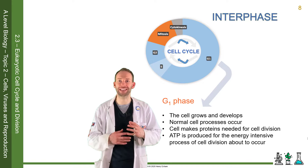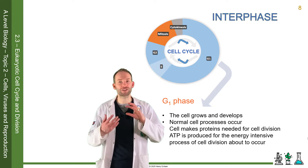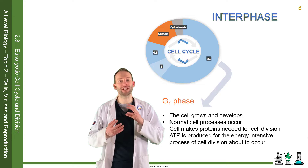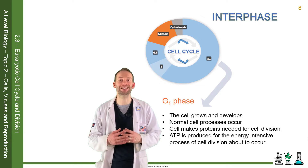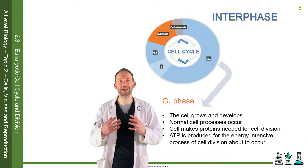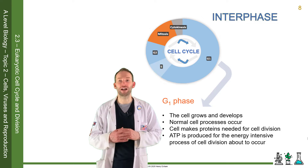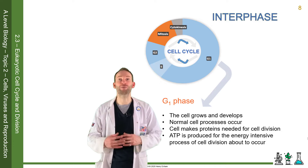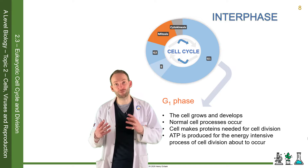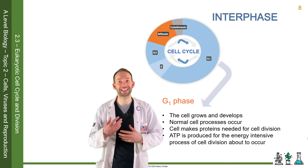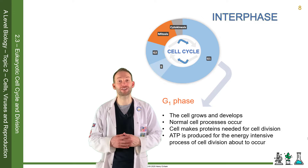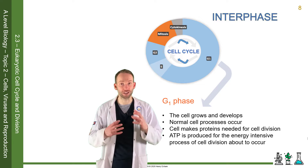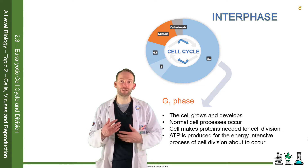So what happens in each of these phases? At G1 phase, the cell grows and develops, and normal cell processes occur like protein synthesis and respiration. The cell makes proteins that it needs for cell division via protein synthesis. And when it's doing respiration, it makes lots of ATP, which it will need later for the energy-intensive process of cell division that's about to occur.